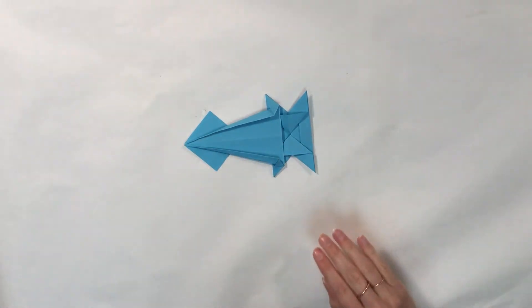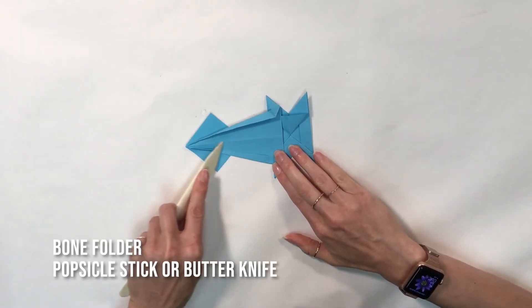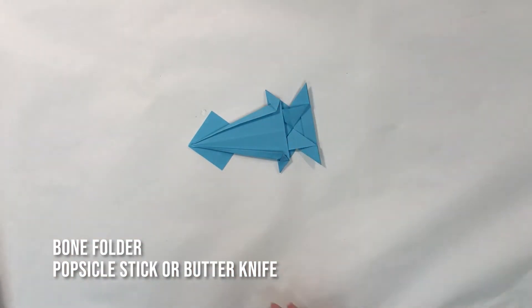As these fold lines in the paper get thicker, you may want to use a bone folder to go back over your fold lines to make them sharper and more crisp. You may also use a popsicle stick or a butter knife.